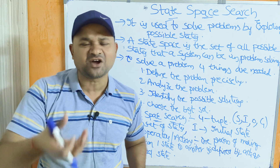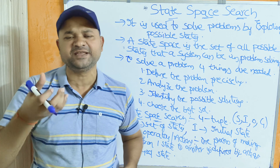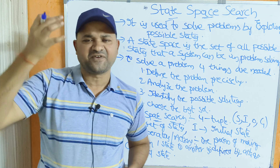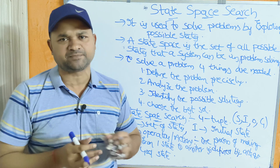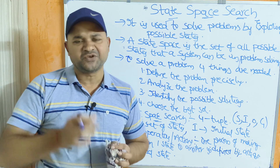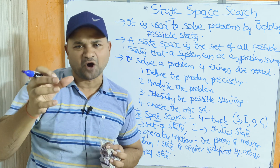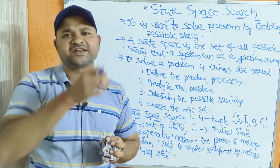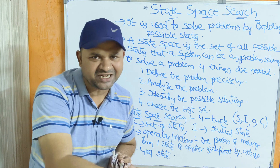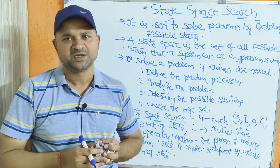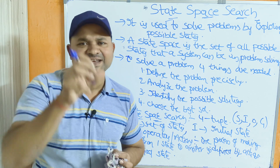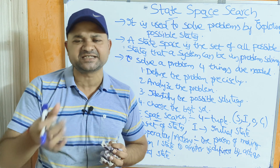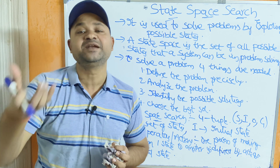The initial configuration of the problem will be in the initial state. The final state is called the goal state. We need to apply a sequence of operators or actions in order to go from the initial state to the goal state. Between the initial state and the goal state, we come across various intermediate states.